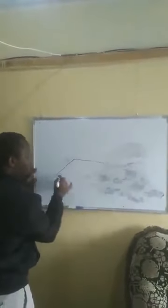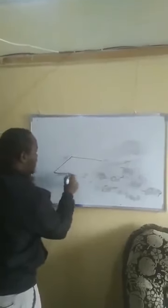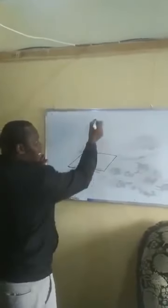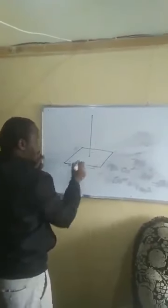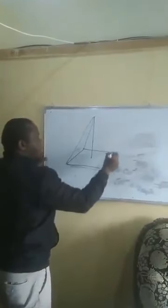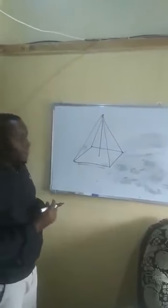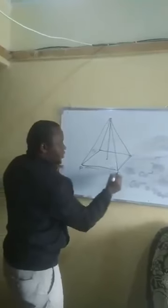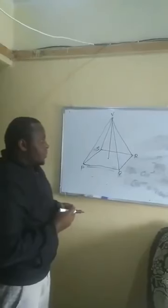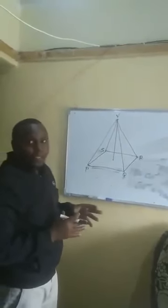I am going to draw a right pyramid. This is the base — the base is rectangular. If it is a right pyramid, it means the vertex is exactly above the center. We label the base P, Q, R, S and the vertex V. We are still on the angle between a line and a plane.